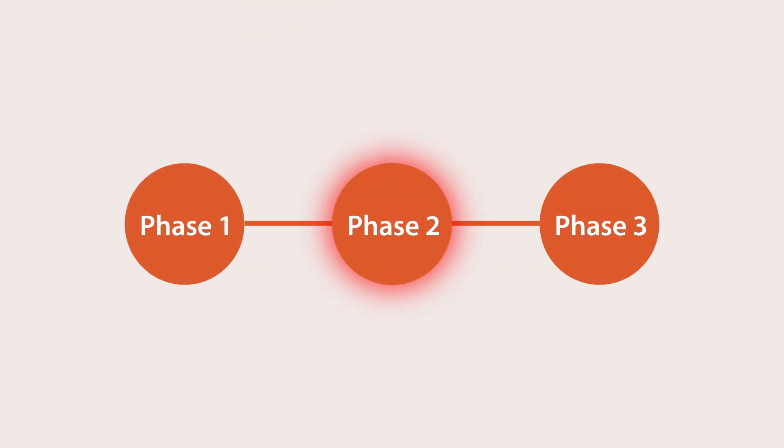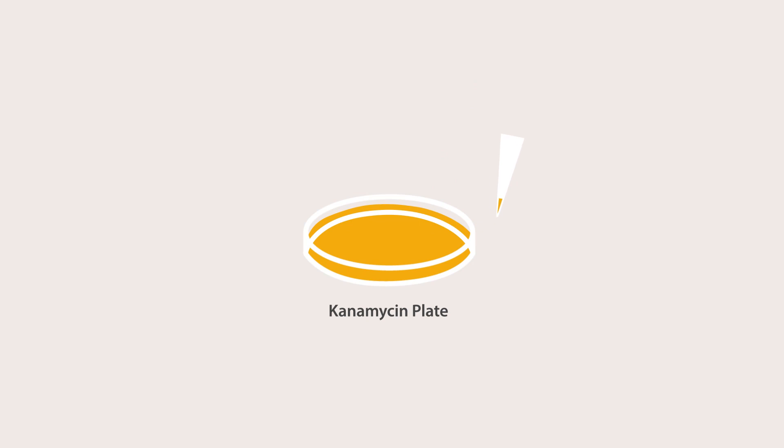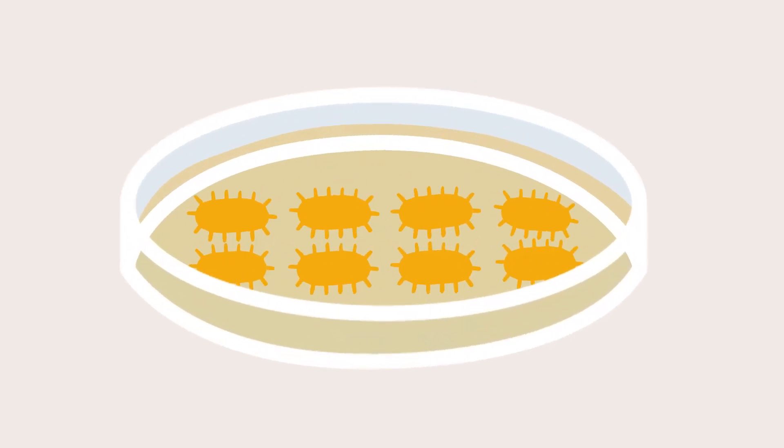In phase 2, all the components are transformed into E. coli. p-cast is transformed first and grown at 30 degrees Celsius on kanamycin plates to select for Cas9 expressing bacterial cells.